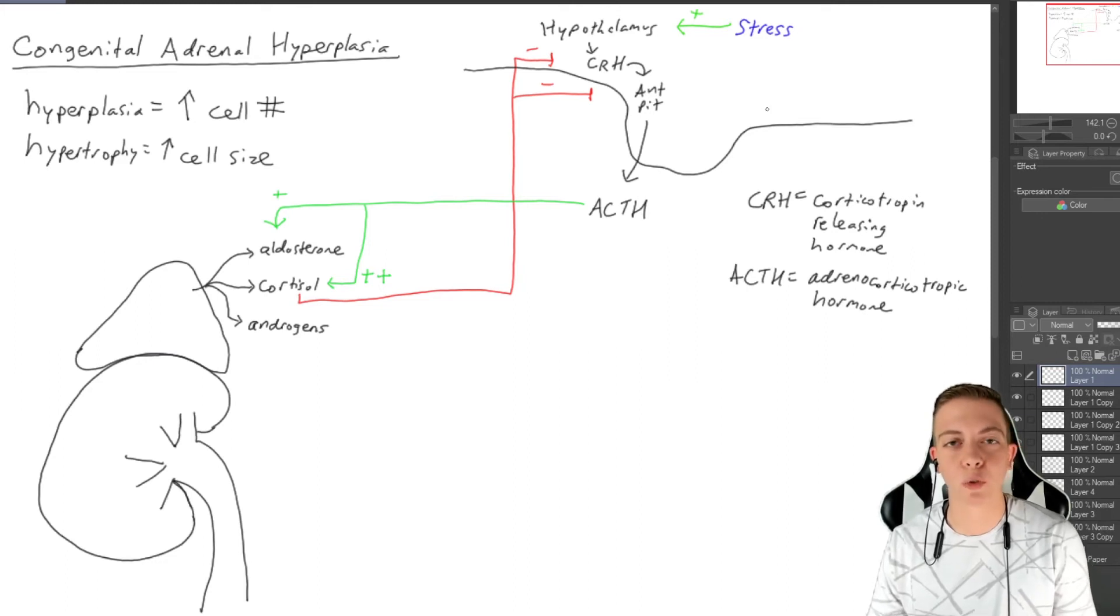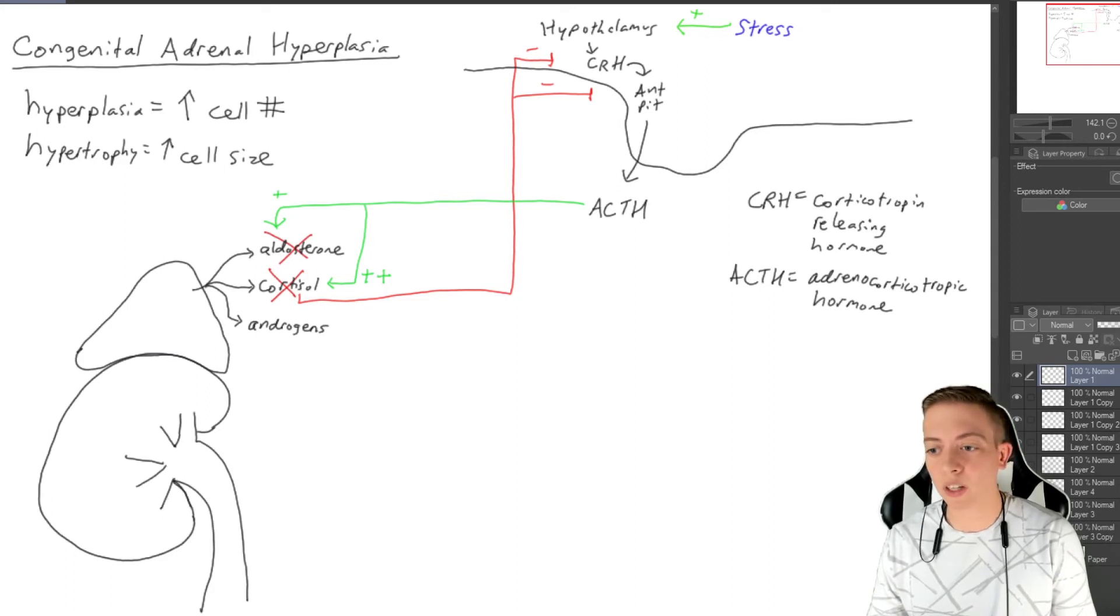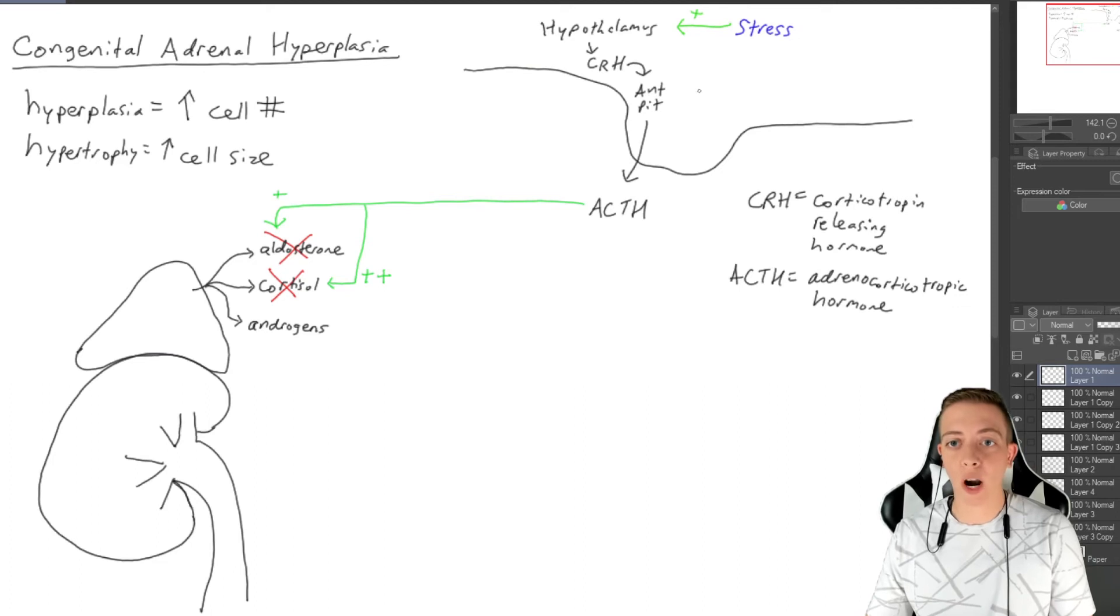But let's say we have a 21-hydroxylase deficiency. If you remember, we can't make aldosterone and we can't make cortisol, so those are no longer in question. If we look at this pathway, we have stress that stimulates the hypothalamus to produce CRH. CRH is going to cause release of ACTH, and then ACTH is going to act on the adrenal cortex. But you can't produce aldosterone or cortisol, so it's going to not cause any negative feedback to go back to the hypothalamus.